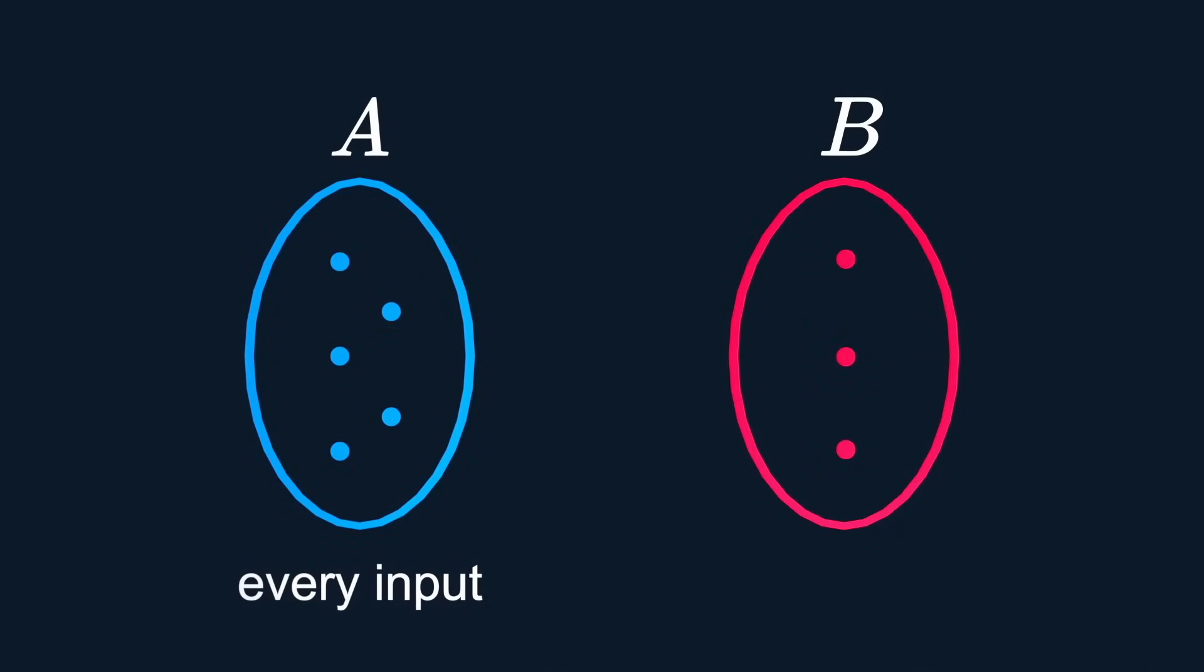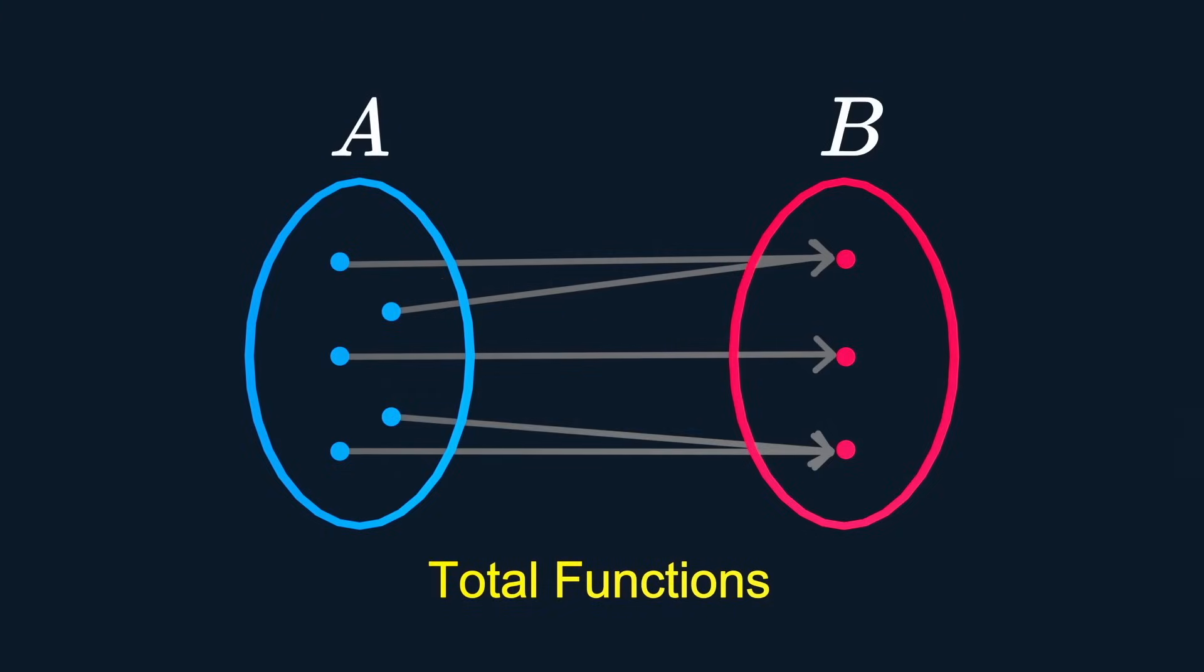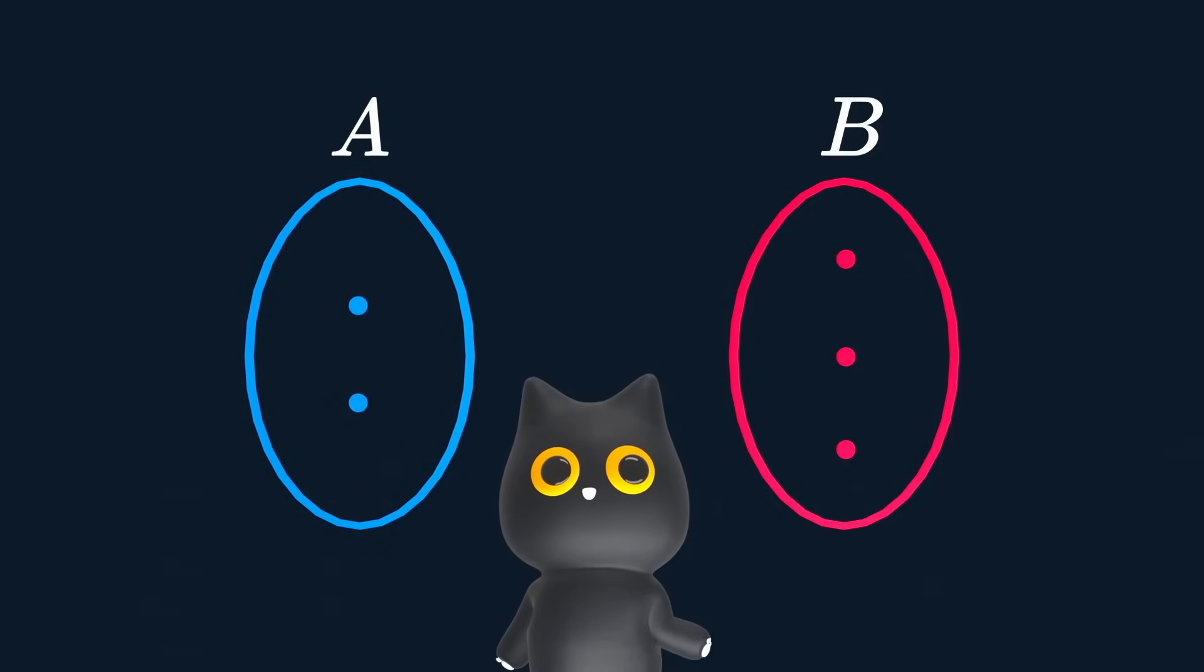For every input in a function, there is exactly one output. This is a function, this is not. We also have total functions and partial functions. A function can possess different properties as well.